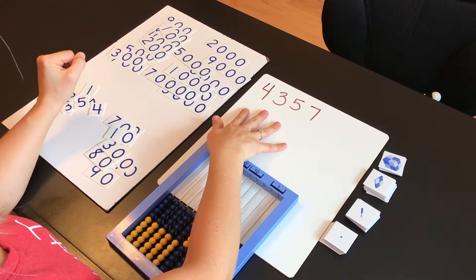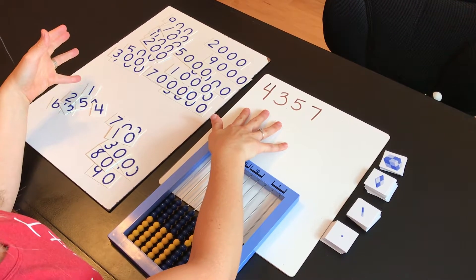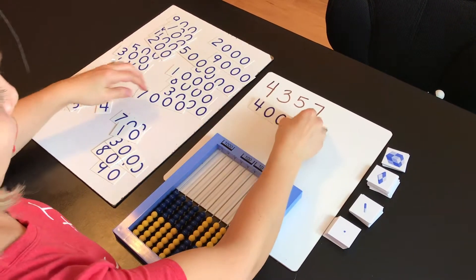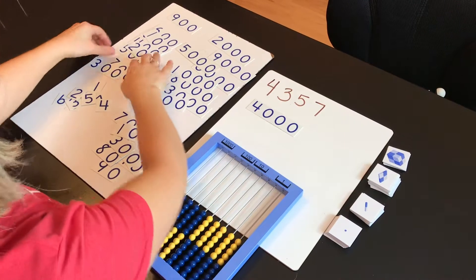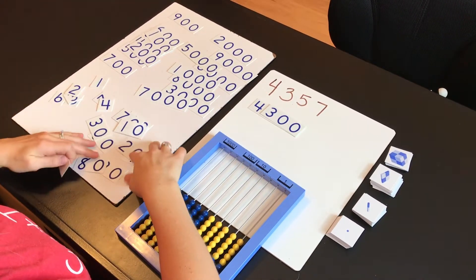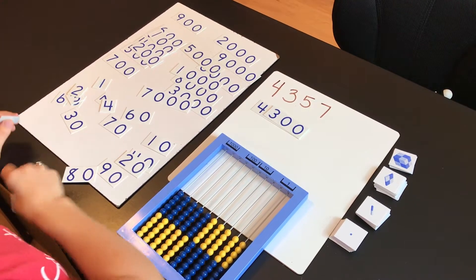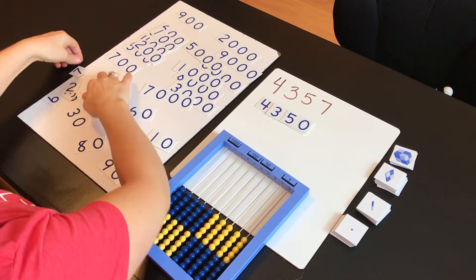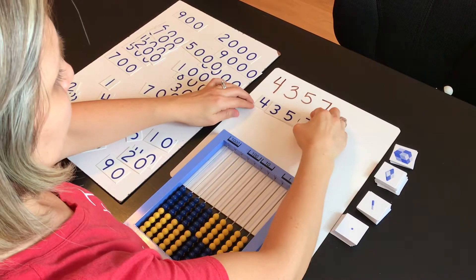So first, if I give my child this number, I would ask them to build using the number place value cards. So she would do the 4,350 and seven.